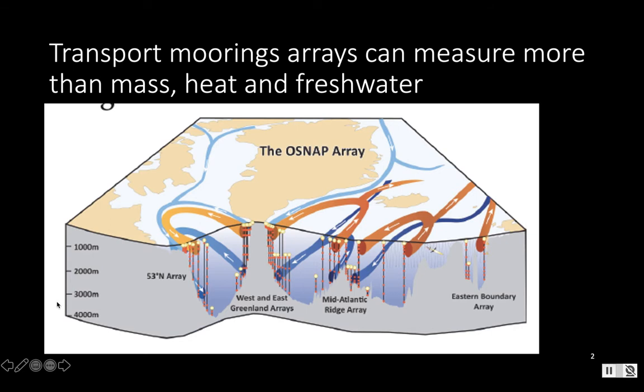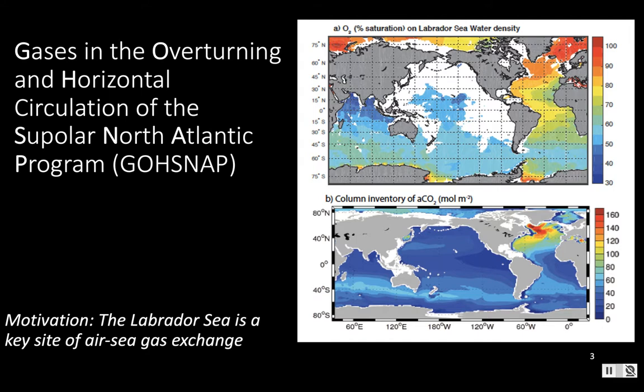My main message is that transport marine arrays can measure much more than mass, heat, and fresh water — and I think they really should when we can. The marine array I'm going to talk about in particular is the OSNAP array, which has been doing a great job measuring those quantities across the subpolar North Atlantic as schematized here. By deploying moorings in the boundary currents, they've captured the full overturning transport of mass, heat, and fresh water through this region. Our goal was to add gases to that picture and study gases in the overturning and horizontal circulation of the subpolar North Atlantic.